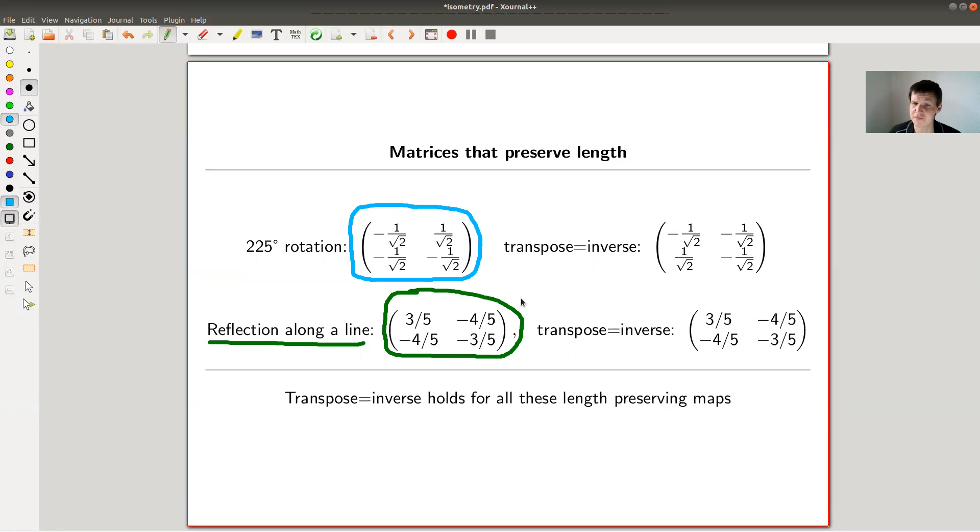The point is something funny you will observe and some really nice criteria to check whether a map, a linear map, is an isometry, whether it preserves length. We observe that in both cases, actually the transpose, which is a very easy operation, right, to just exchange those two entries in this case, is the inverse, which is a much more complicated operation. The question, so transpose equals inverse holds here. And the question is, is this a fluke, a coincidence, or is this a more general pattern?